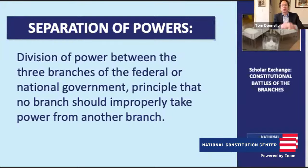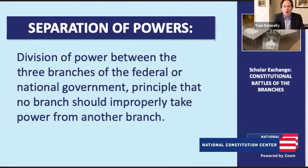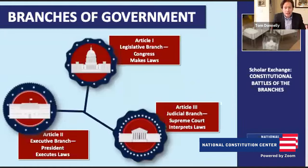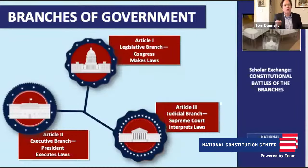Article 1 establishes Congress, placing the legislative powers in Congress. Article 2 establishes the executive branch, placing the executive power in the president. Article 3 sets up a federal judiciary and places the national judicial power in that judiciary, headed by the Supreme Court. In terms of responsibilities: Congress makes the laws, the president enforces and carries out the laws, and the judicial branch interprets the laws.